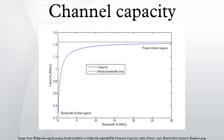The key result states that the capacity of the channel, as defined above, is given by the maximum of the mutual information between the input and output of the channel, where the maximization is with respect to the input distribution.